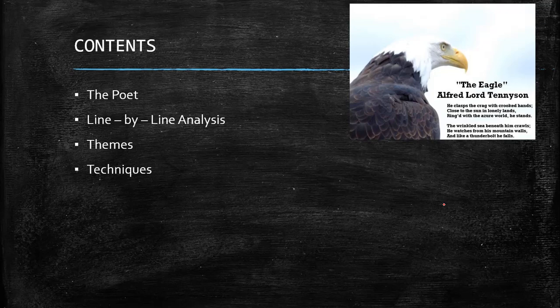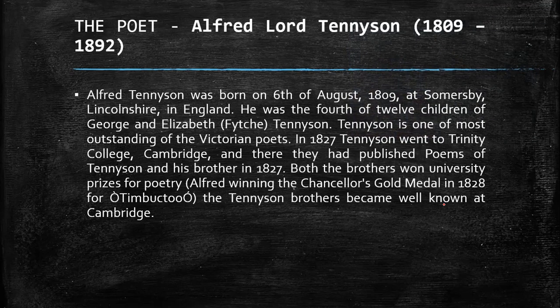First, we will talk about our poet. Alfred Lloyd Tennyson was born on the 6th of August 1809 at Somersby, Lincolnshire in England. He was the fourth out of twelve children of George and Elizabeth Tennyson. Tennyson is one of the most outstanding Victorian poets.